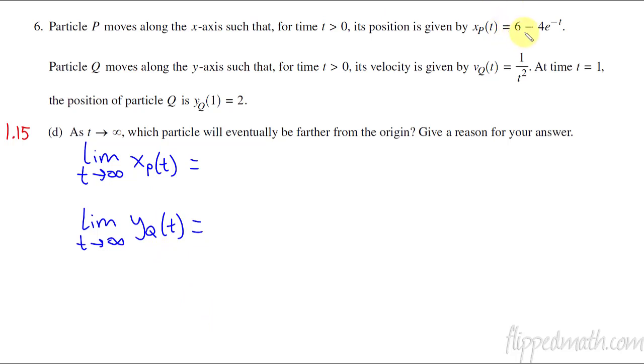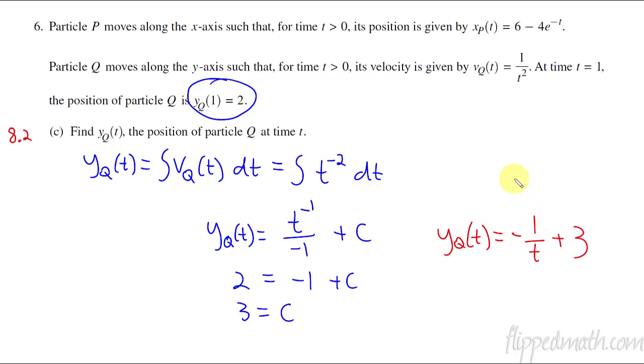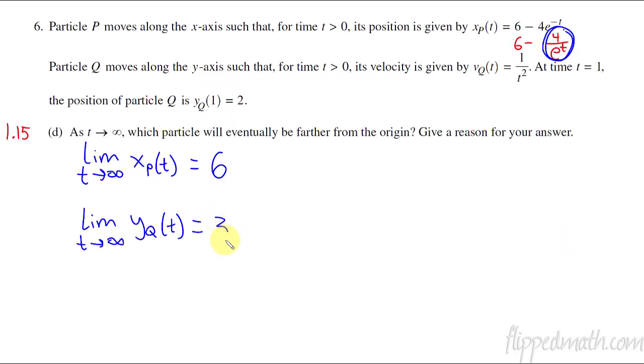Think of x of P here. This is the same thing as 6 minus 4 over e to the t. So this fraction here is approaching the number 0 as t approaches infinity. So the whole function, the position, is approaching the value of 6. Now let's look at the position of y. We just did that one in part C. And so this fraction right there, that thing is approaching 0 as t approaches infinity. So 0 plus 3 gives us 3.